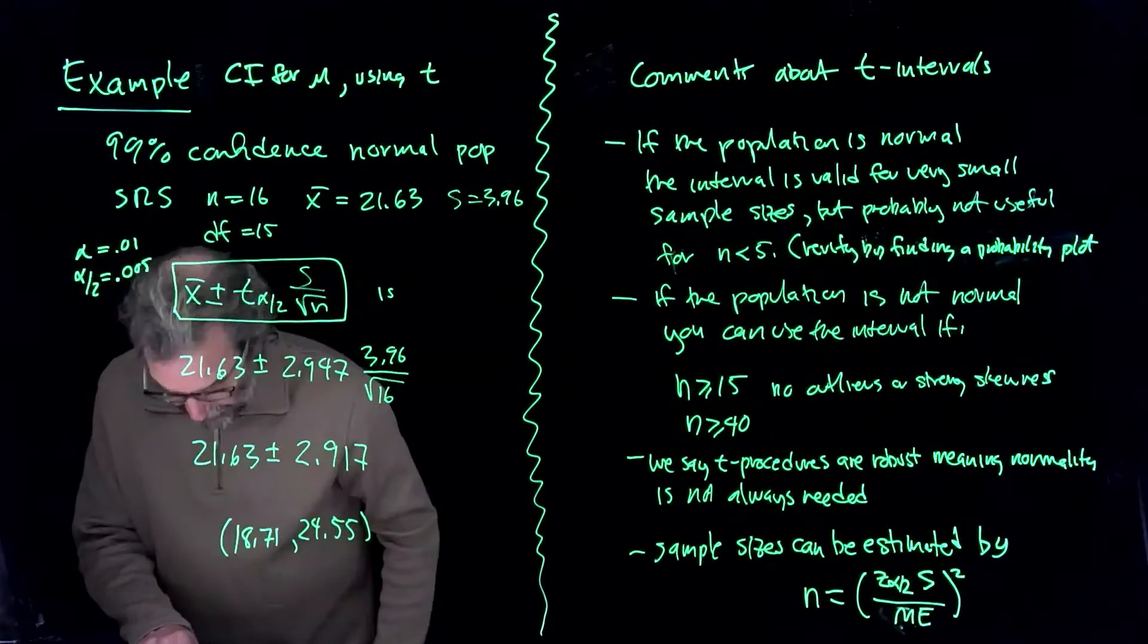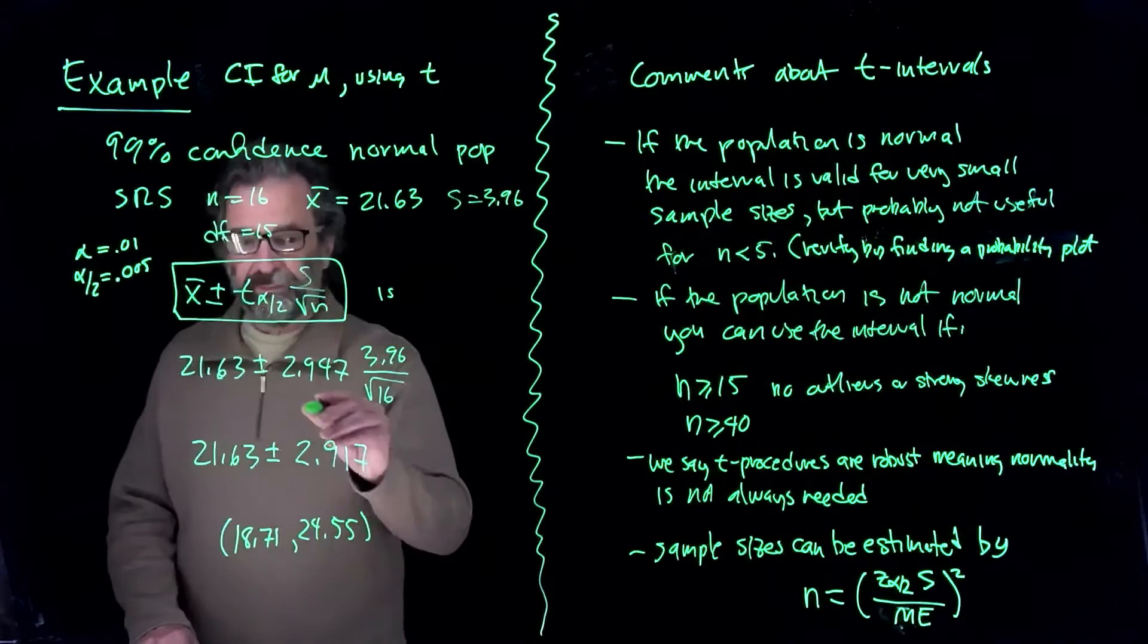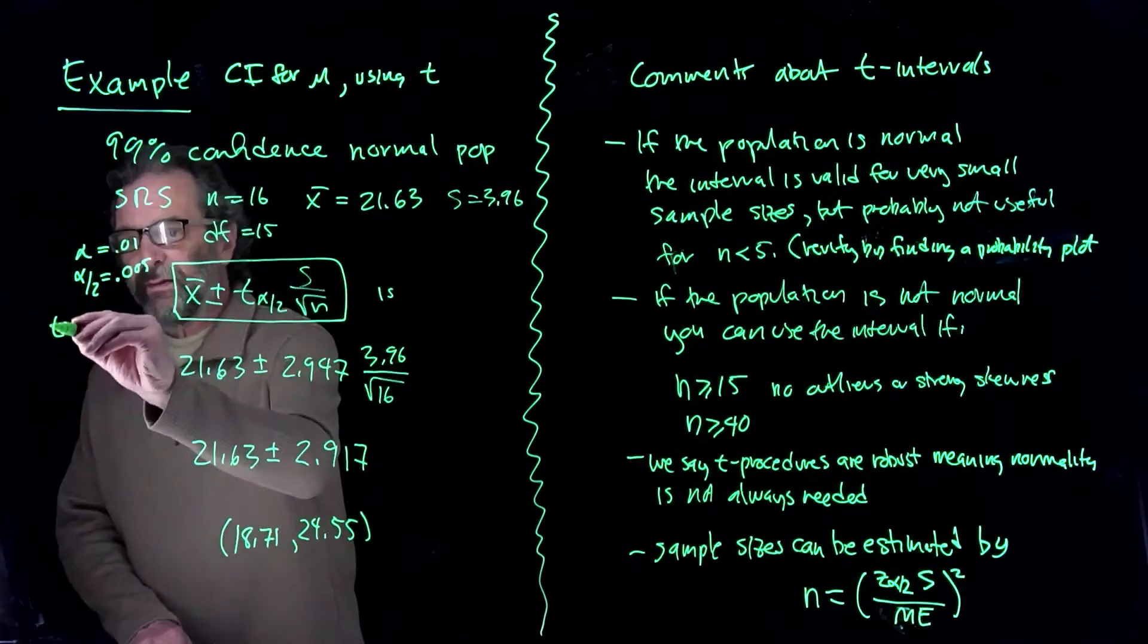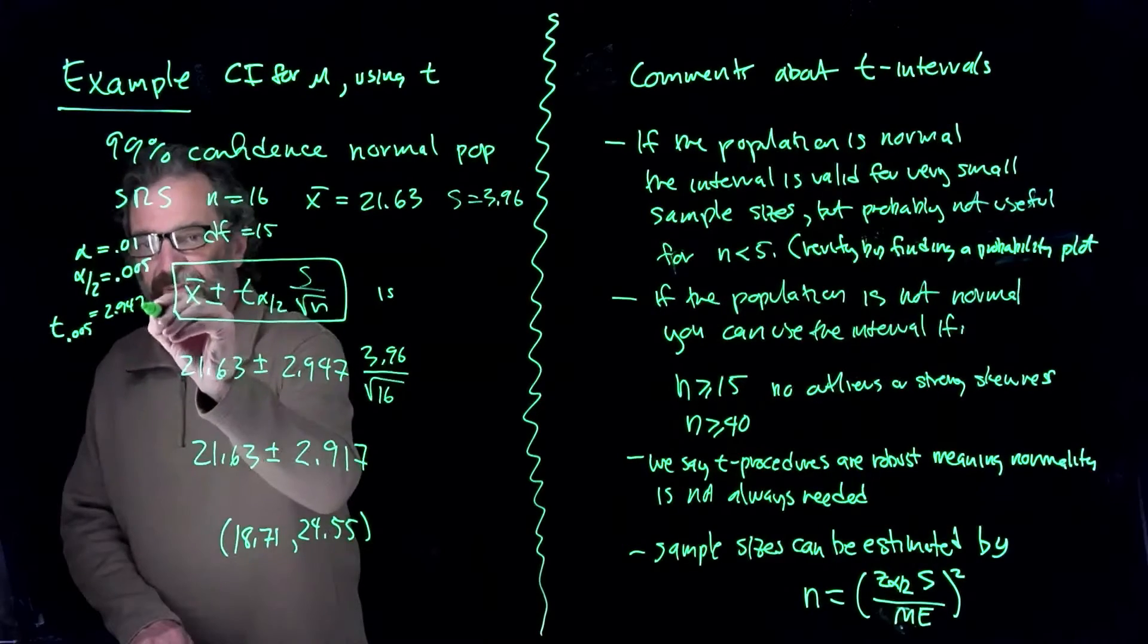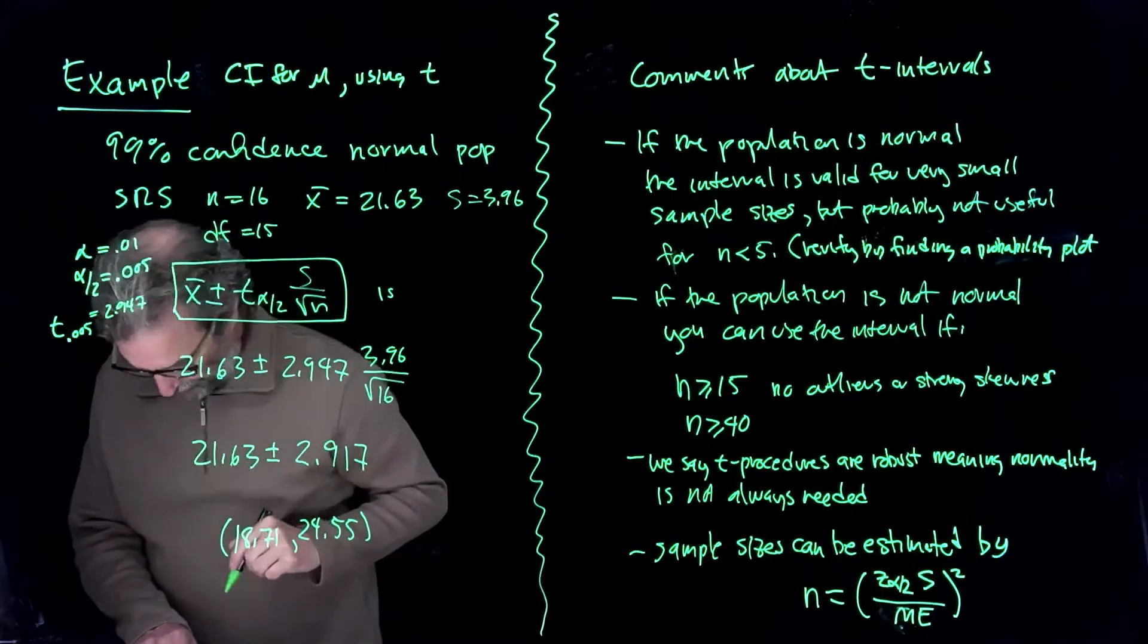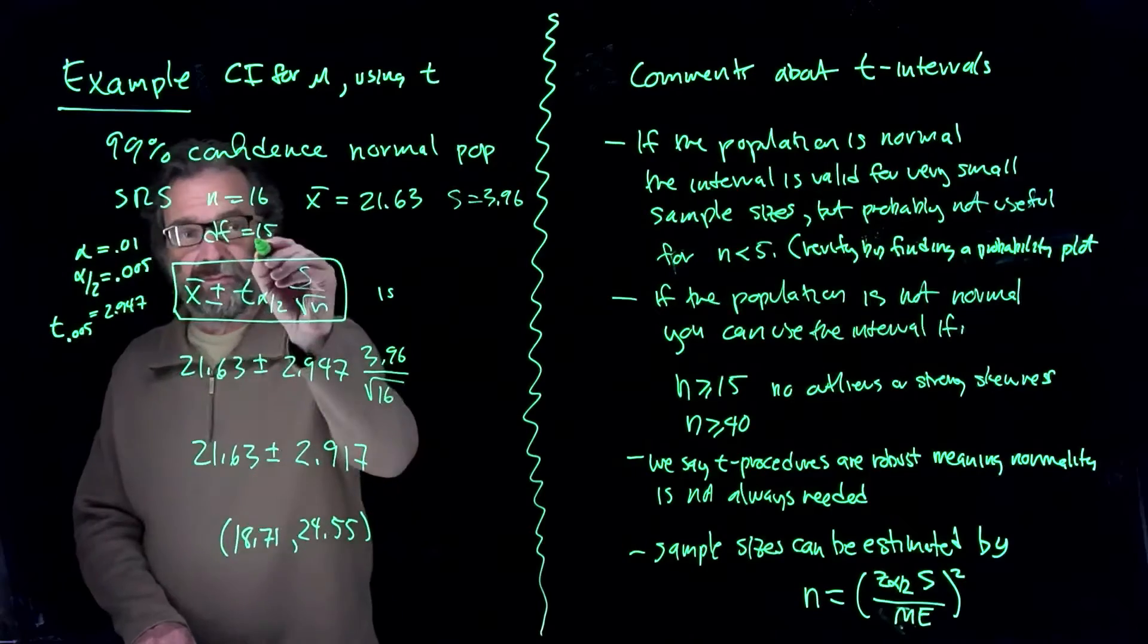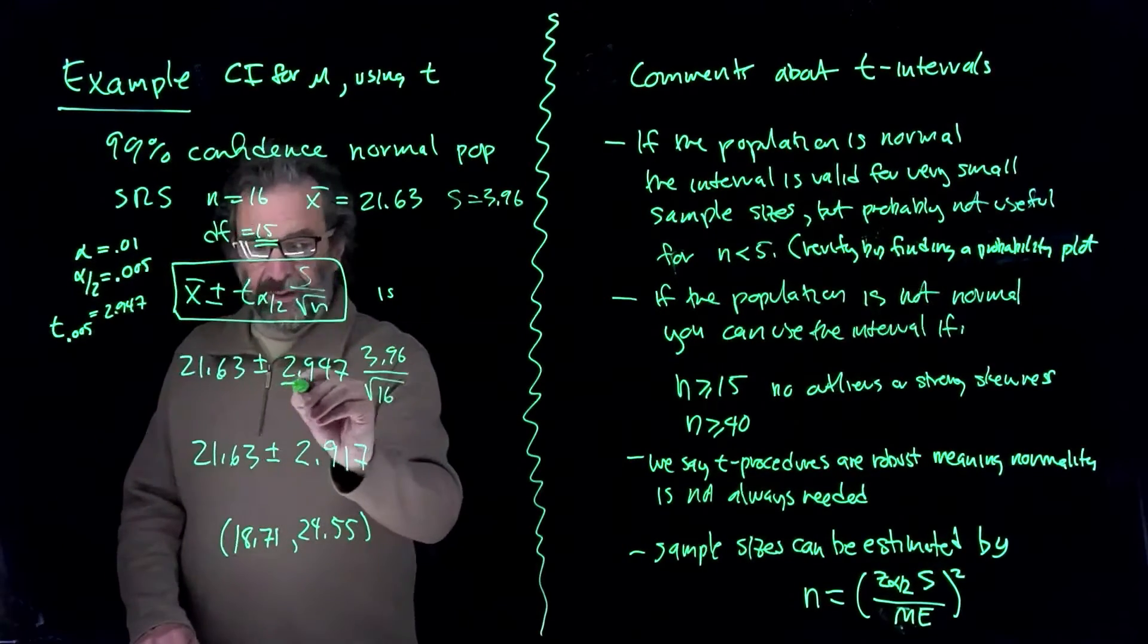I'm finding it, 2.947. T with the tail probability 0.005 is 2.947 from the tables. I'm looking right at it, degrees of freedom 15. So that's okay.